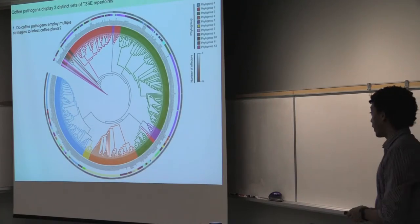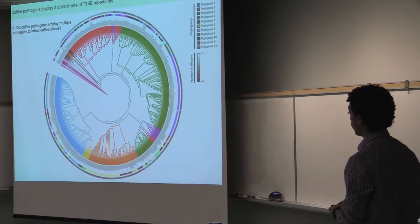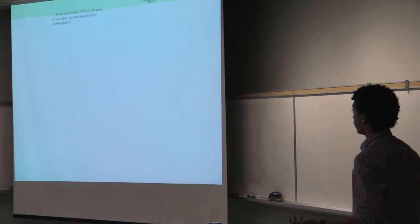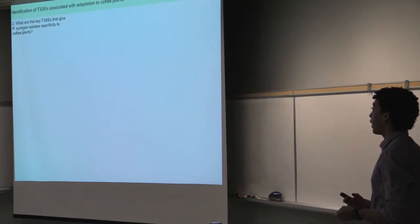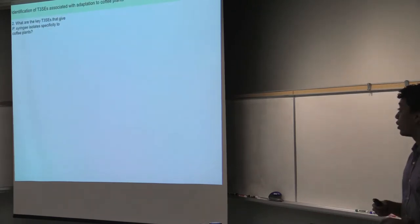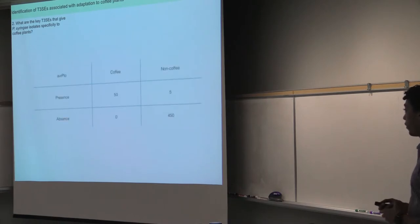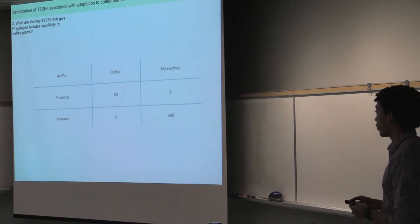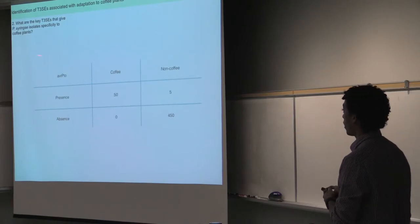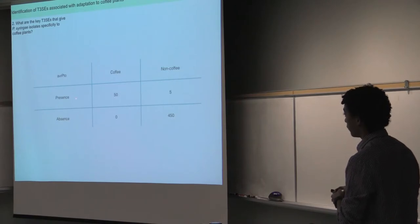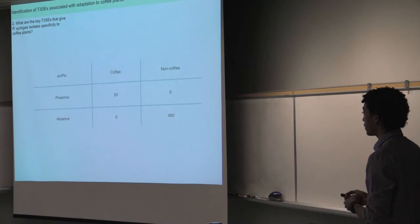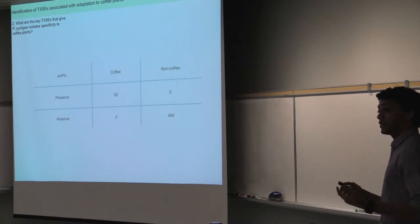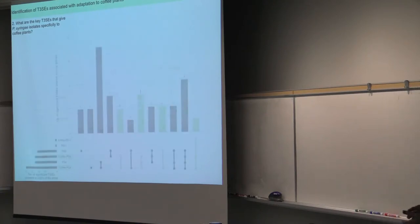So for the ones that do use type 3 effectors to cause disease, we then go to a second question where we try to identify effectors that are specific to coffee. And all we're doing here is performing a Fisher exact association test, which is just for any effector family that we have, we calculate the distribution of presence and absence of these genes in two groups, coffee pathogens and non-coffee pathogens. And any association that is significant, we want to know about it.